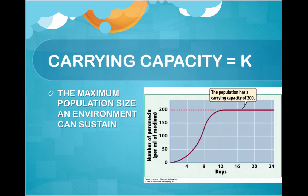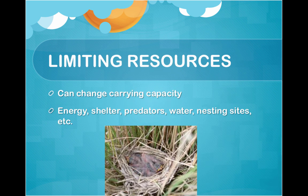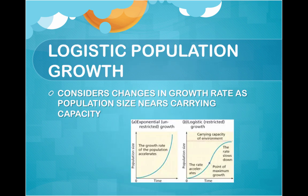Carrying capacity, which is K, is the maximum population size that an environment can sustain. Carrying capacity changes with the availability of limited resources — things like energy, shelter, predators, water, nesting sites, etc. Logistic population growth considers changes in the growth rate as the population size nears carrying capacity.